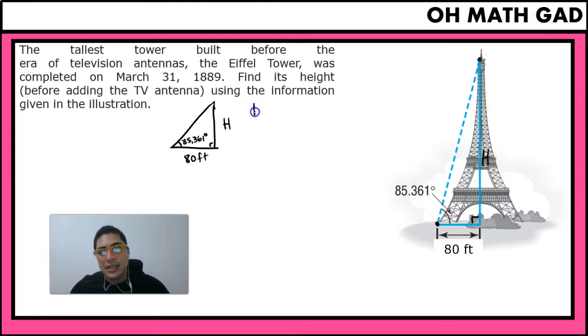So if we use our tangent, the tangent of the angle is equal to the opposite side, which in this case is H, divided by the adjacent side, which in this case is 80. We already have the angle. So we have the tangent of 85.361 degrees is equal to H divided by 80.